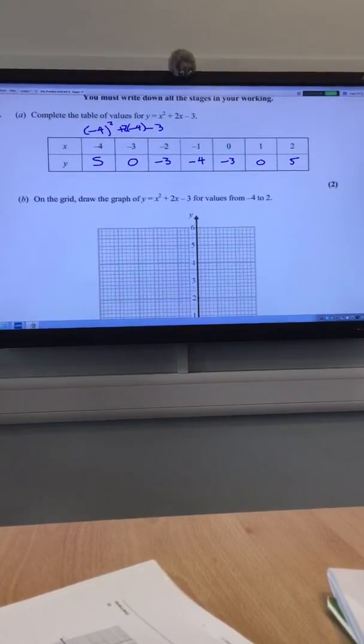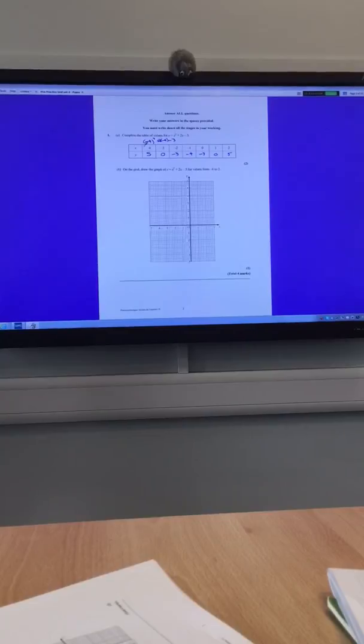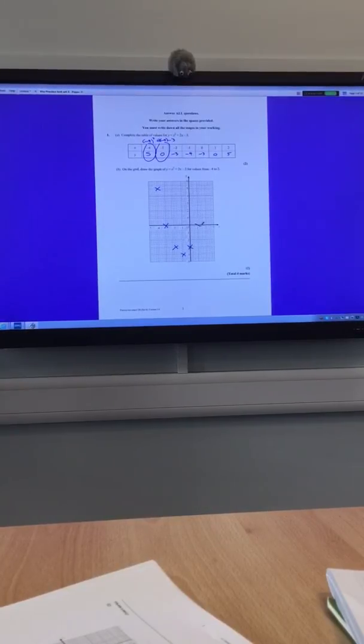Next bit is draw the graph of that. If I'm drawing the graph, you use coordinates. So minus 4, 5 is up here. Make sure you're careful with your axes and your scales. They are going to try and penalize you for any mistake you make. Minus 3, 0 is there, minus 2, minus 3 is there, minus 1, minus 4 is there, 0, minus 3, 1, 0, and finally 2, 5. Once you've done that, don't lose one mark by not joining it in a smooth curve. Try and make it smooth, change direction and come back again.